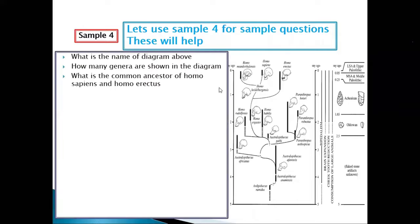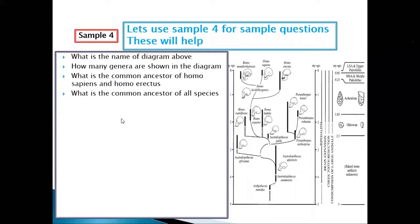What is the common ancestor for Homo sapiens and Homo erectus? Find Homo erectus and Homo sapiens on the tree, draw a line back until they meet — Homo ergaster is the common ancestor. What is the common ancestor for all species? That is Ardipithecus ramidus.